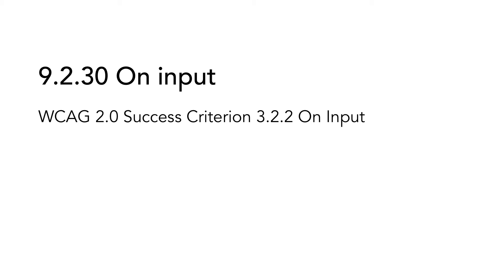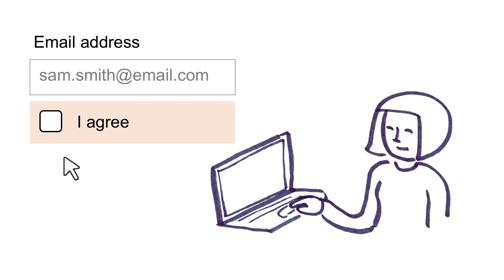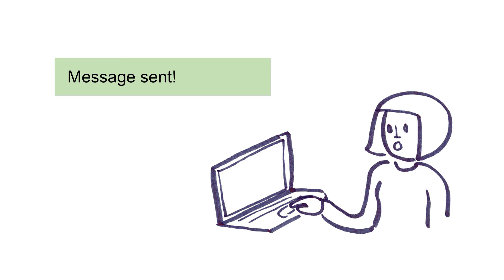9.2.30 On Input is based on WCAG 2.0 Success Criterion 3.2.2 On Input. This criterion is related to the previous one, but addresses input components. So entering text in a text field or checking a checkbox should not automatically trigger an event. One example is if a form is automatically posted as soon as the user clicks the checkbox 'I agree with the terms and conditions' — this would be a fail. Remember to give the user information on what will happen, before it happens.